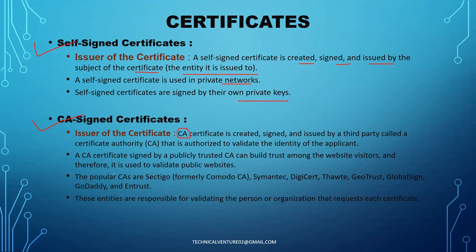CA-signed certificates come from trusted authorities. Popular certificate authorities include Symantec, DigiCert, GeoTrust, GlobalSign, and GoDaddy. These are the publicly trusted certificate authorities. Organizations trust these authorities, so any certificate signed by them is considered trustworthy. That's why when you open any website, you see a lock icon on the left side of the URL — that indicates the certificate is trusted and is mainly used to validate public websites.